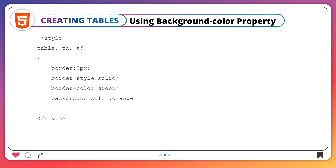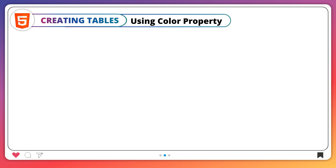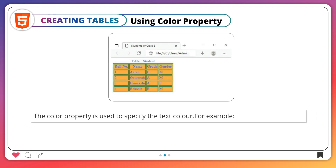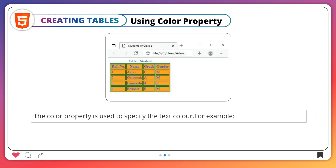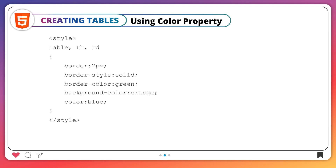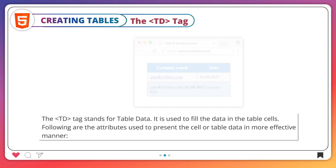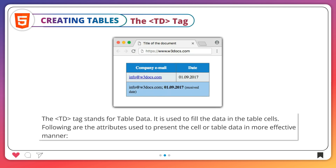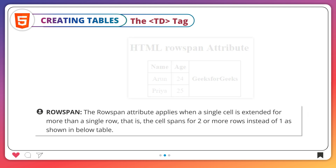For example. Using the color property: the color property is used to specify the text color. For example. The td tag stands for table data. It is used to fill the data in the table cells. Following are the attributes used to present the cell or table data in a more effective manner.